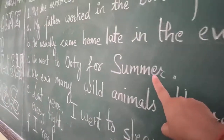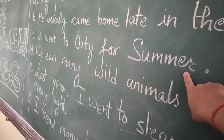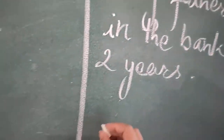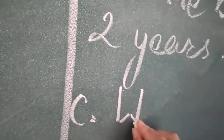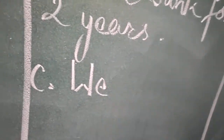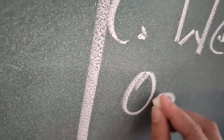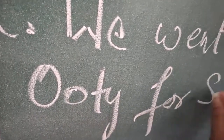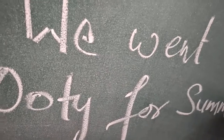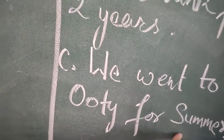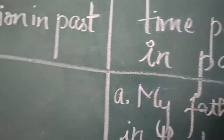Sentence C: 'We went to Ooty for summer.' We could write it in 'Action in past' also, but summer is mentioned. So I am putting the sentence in 'Time period in past.' It is mentioning something done in the past time — it's already done in summer. That is why I am using the sentence in the time period in past column.